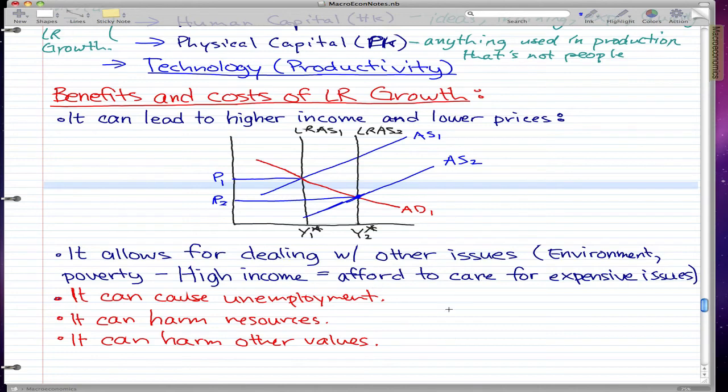A second cost is that it can harm resources—again, this could be related to technology. And lastly, it can harm some other values that people care about, like social